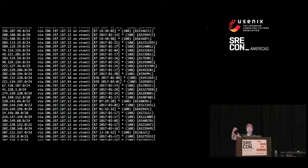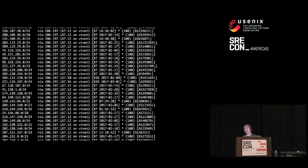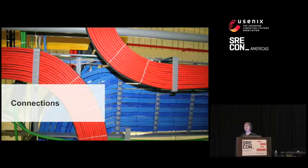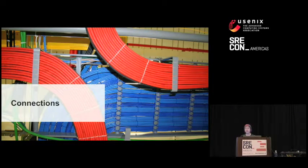Here's what a very tiny piece of an actual routing table looks like. The current number of entries just for IPv4 on the internet is over 650,000, and it is growing every day. So obviously I couldn't show you the entire one — it would take up all the slides. Now we know how the switches and routers know where to send the packets, but how do they get those connections to their interfaces in the first place?